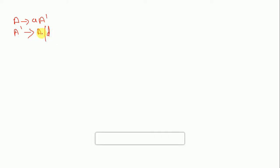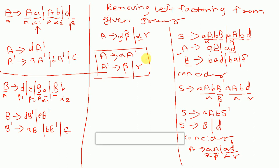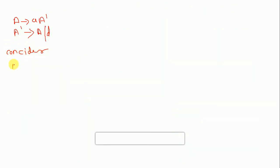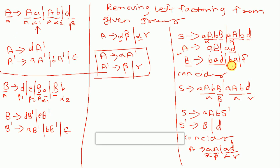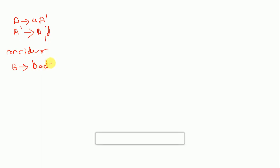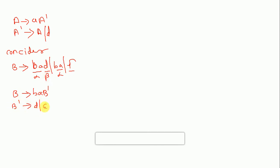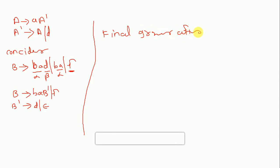For B: B gives b a d slash b a slash f. Here 'b a' is common — alpha is 'b a', beta is 'd', gamma is epsilon since only 'b a' remains. So B gives b a B-dash slash f, and B-dash gives d slash epsilon. The 'f' does not relate to any alpha so it is written as-is.